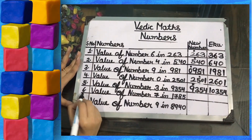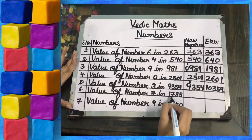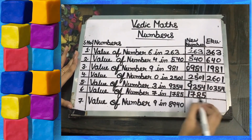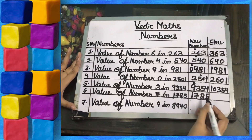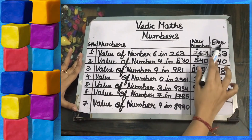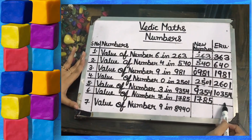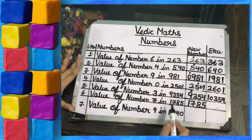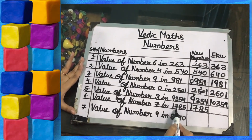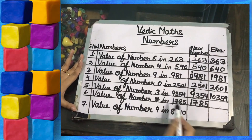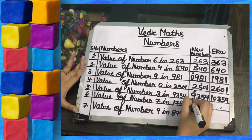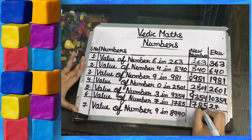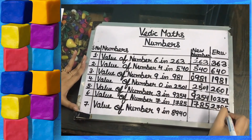Sixth part — value of number 7 in 1785. We write the number 1785. We need to find the Ekadiken Purven, which means plus 1 in the previous digit. The previous digit of 7 in 1785 is 1, so we put a dot on 1. 1 plus 1 is 2. The 7, 8, and 5 all remain the same.